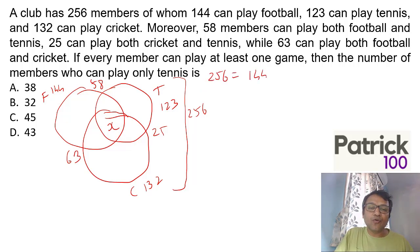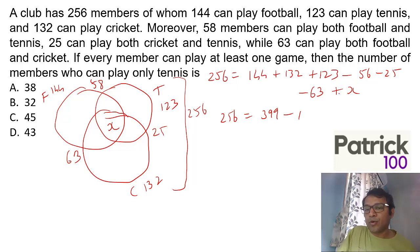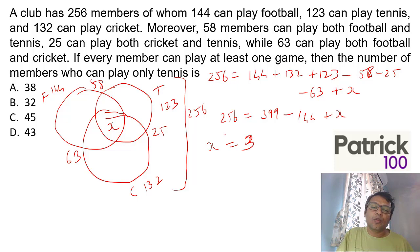The number of members who can play only tennis - the only value you don't know is all three, call it x. 256 = 144+132+123 - (A∩B + B∩C + A∩C) + x. So 256 = 399 - 143 + x. Solving: 58+25+60=143, so x=3. Once you get x=3, for only tennis: 123 - (55+22+3) = 43, the answer.